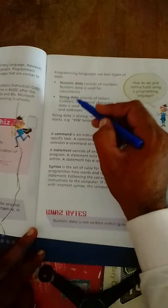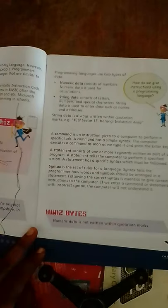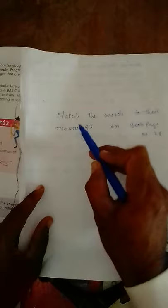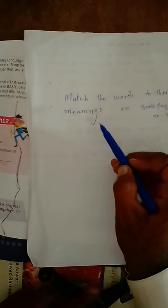Dear students, now I am going to give you some homework that you will have to do and send me on our WhatsApp group. Your homework is to match the words to their meanings on book page number 28. On book page number 28, there is an activity that you will have to solve. The activity is based on matching the words to their similar meanings.